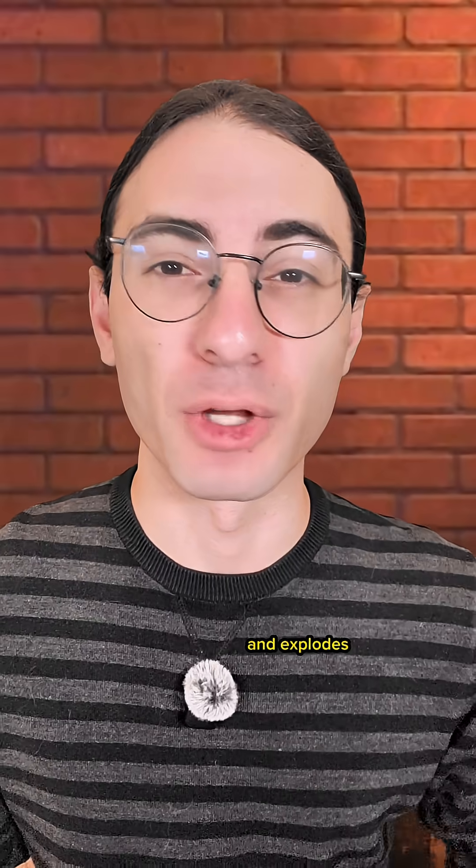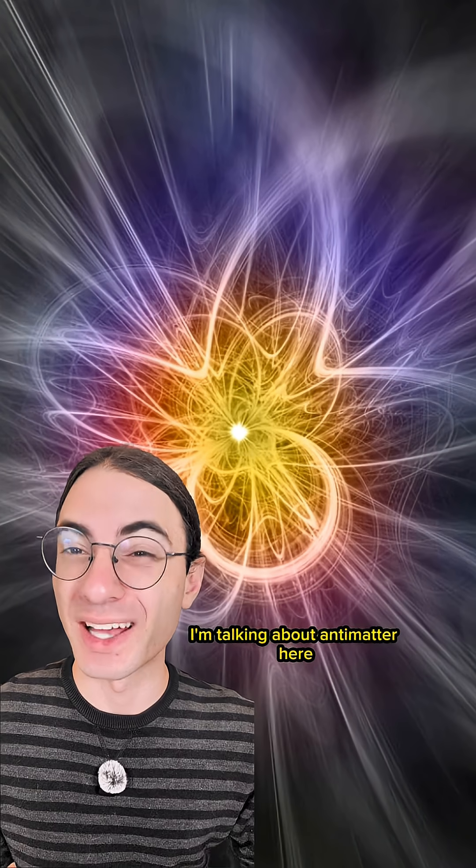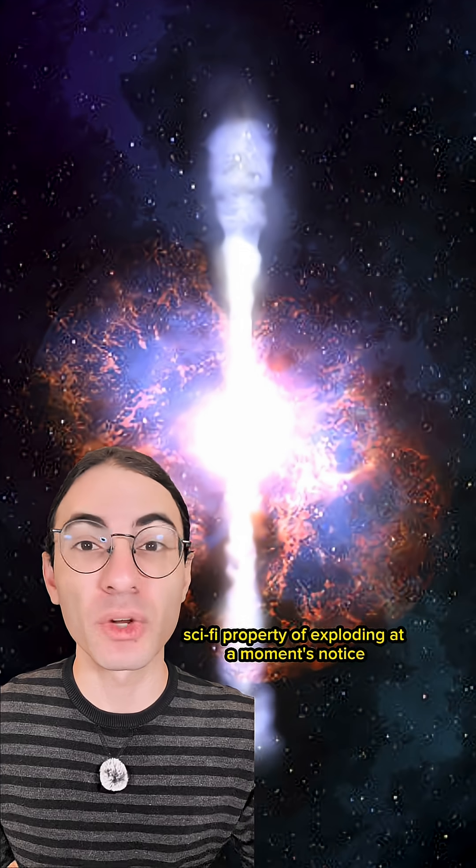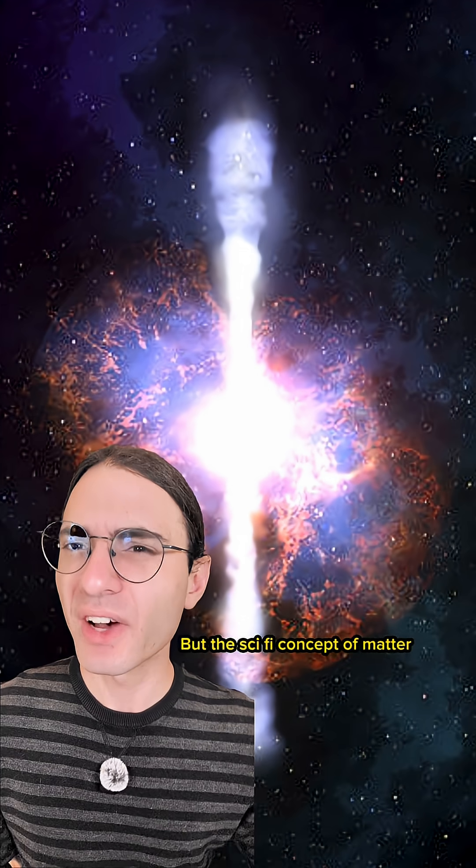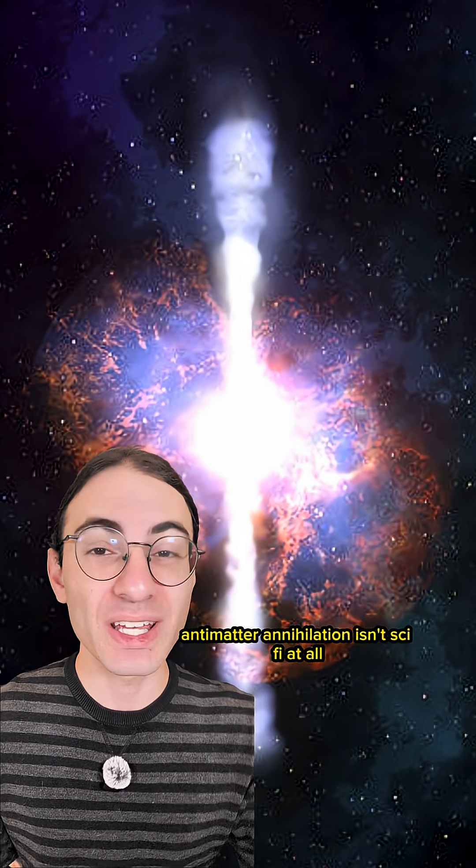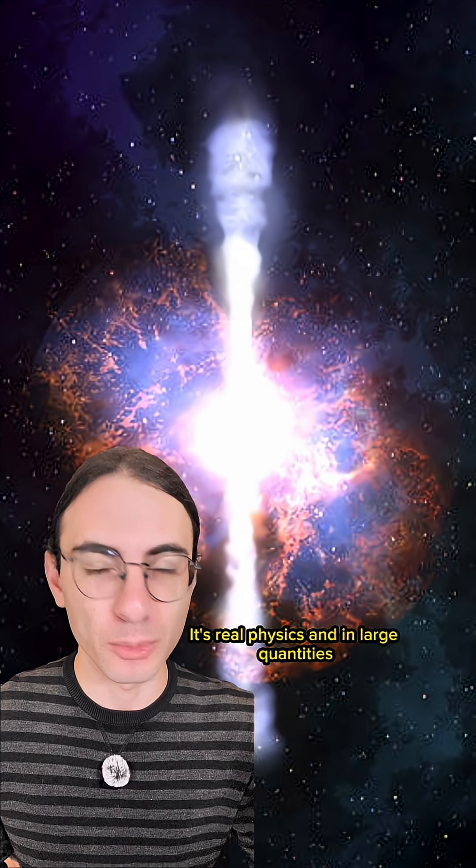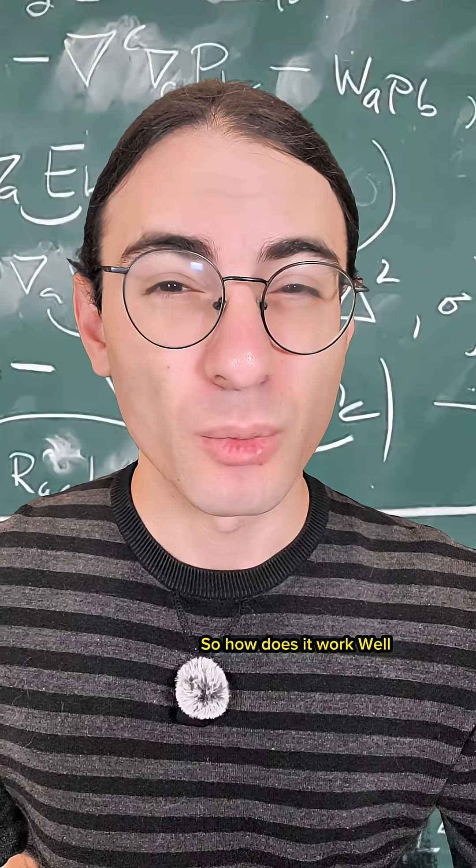So a positron walks into a bar and explodes. I'm talking about antimatter here and its well-known sci-fi property of exploding at a moment's notice. But the sci-fi concept of matter-antimatter annihilation isn't sci-fi at all. It's real physics, and in large quantities would be extraordinarily violent. So how does it work?